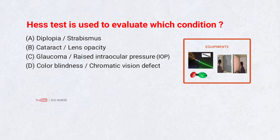HES test is used to evaluate which condition? A. Diplopia/strabismus. B. Cataract/lens opacity. C. Glaucoma/raised IOP. D. Color blindness/chromatic vision defect. Correct answer: A.